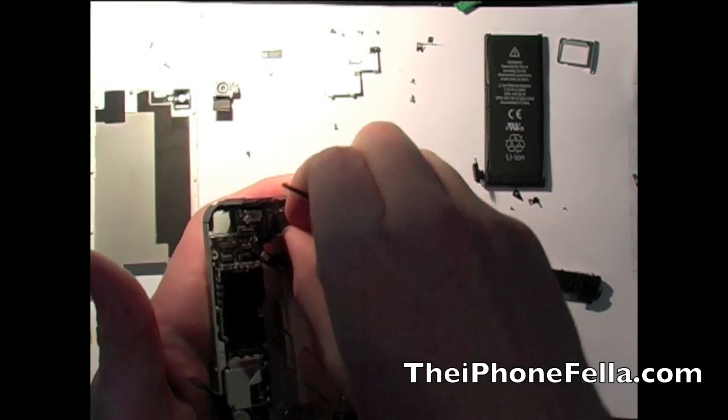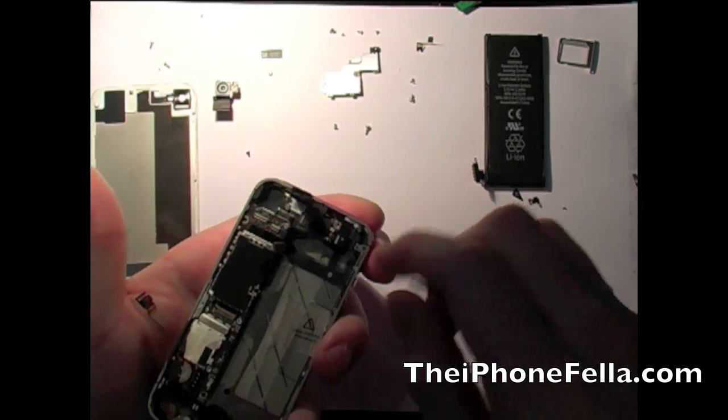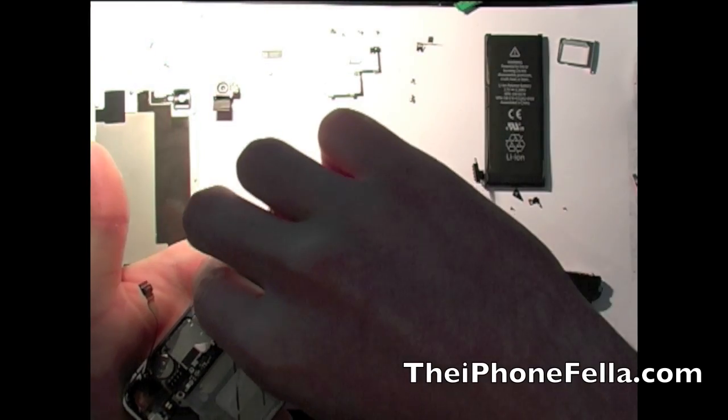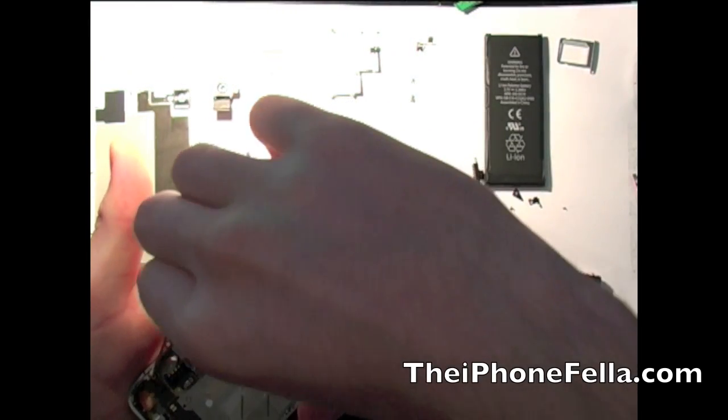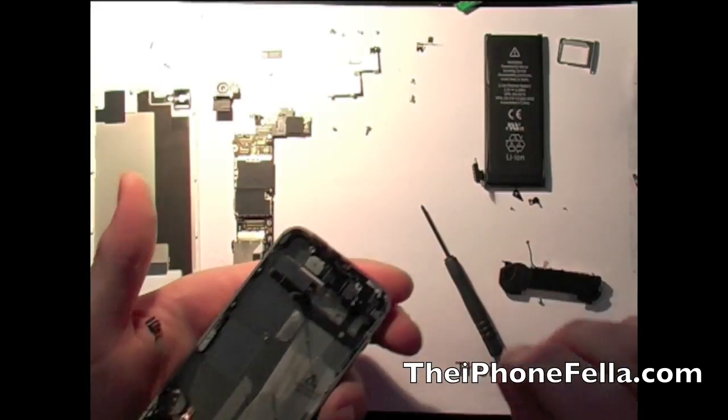There is still an antenna cable attached at the top right hand side of the logic board. Make sure you remove this. Once you have everything disconnected you can go ahead and take out the main logic board.